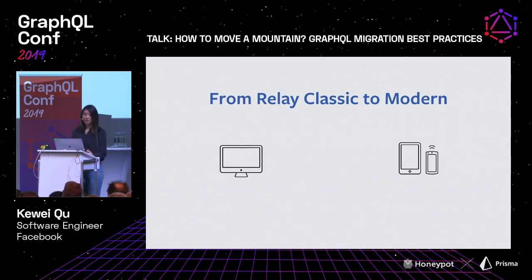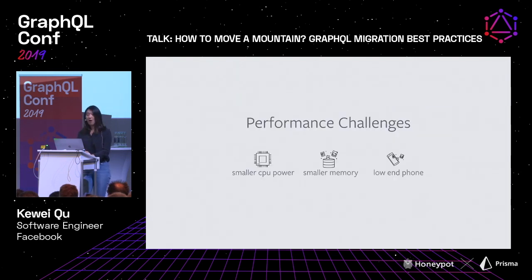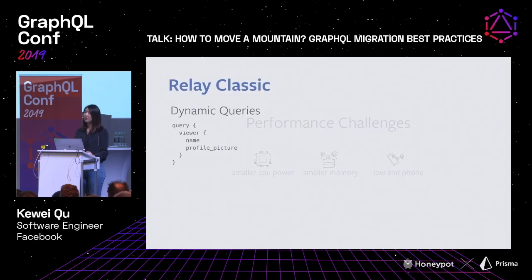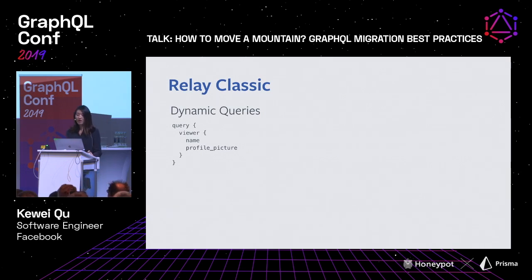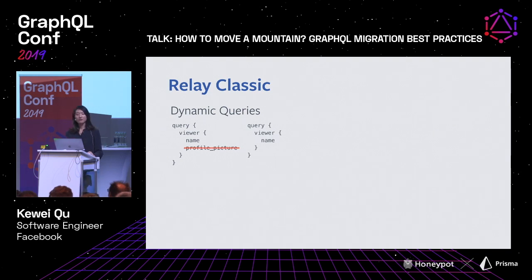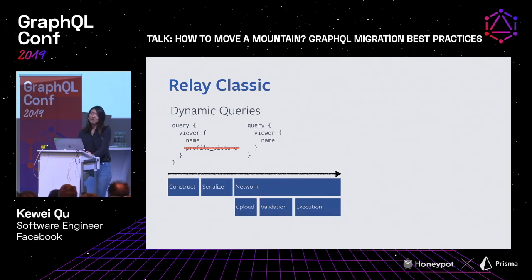Relay Classic worked really, really well for a long time. However, with the emphasis changed from desktop to mobile, we found ourselves running into serious performance challenges. Mobile phones just have smaller CPU power, smaller memories. And especially with low-end phones, the network bandwidth really poses additional challenges. One of the things we realized with Relay Classic is that the flexibility of dynamic queries comes with great cost. Dynamic queries allow us to, at runtime, insert or delete certain fields or fragments.